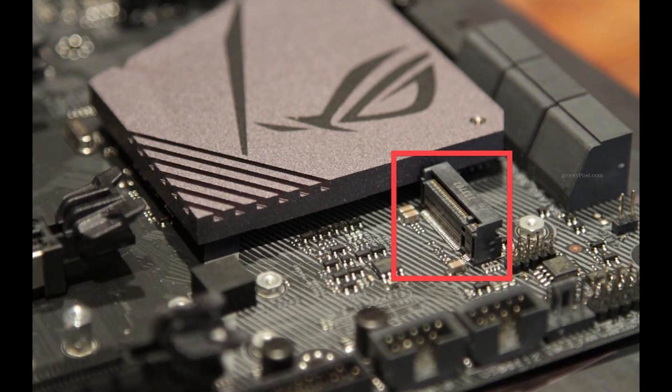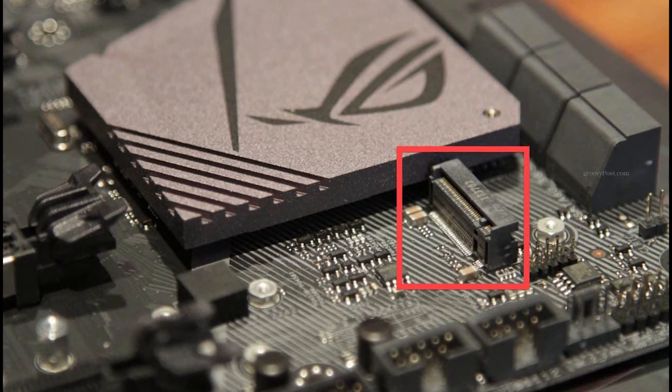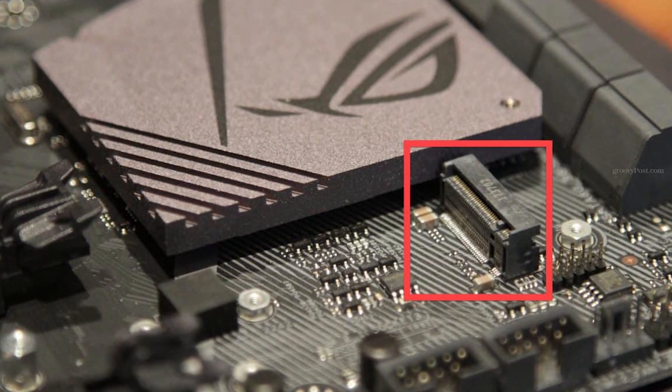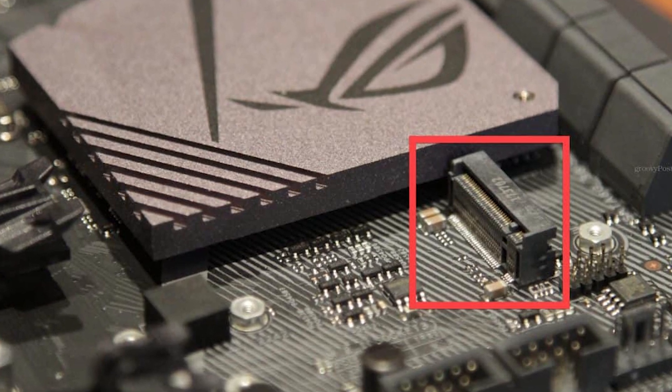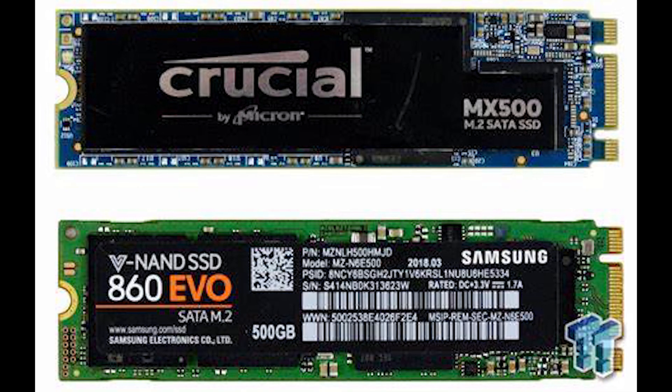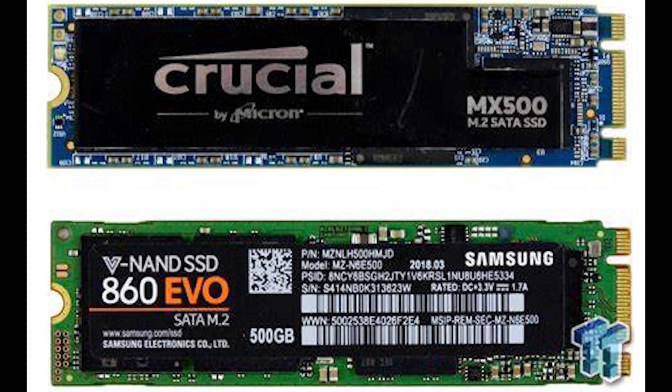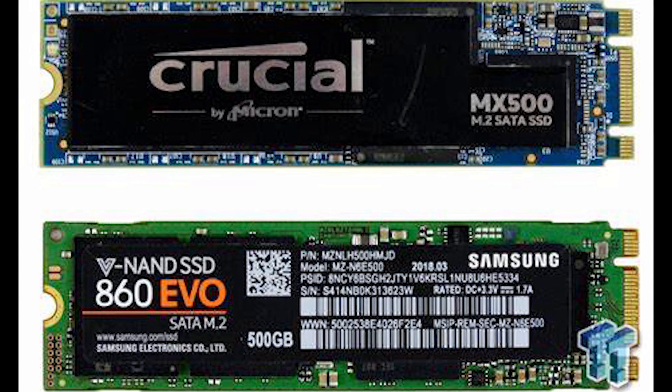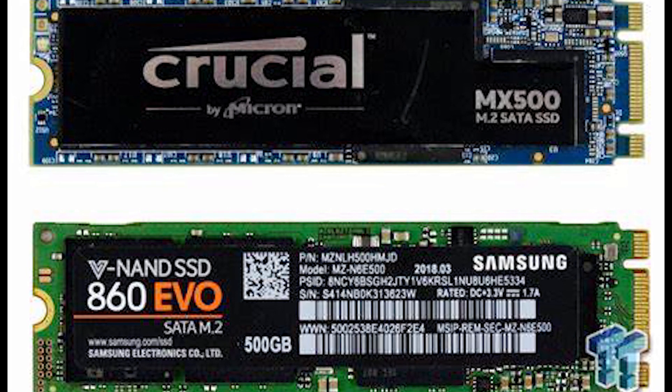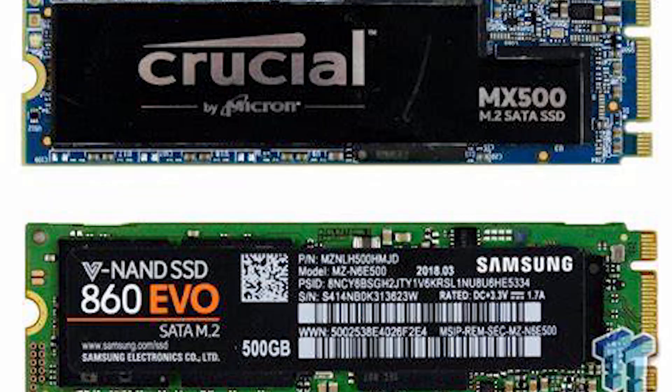The next one is NGFF M.2 SSD, which is the refined version of mSATA SSD. M.2 is an expansion slot that can connect with SATA 3.0, PCIe 3.0, and USB 3.0. NGFF M.2 SSD is also called SATA M.2 SSD. Its speed is the same as SATA 3 SSD and mSATA SSD. If the motherboard of your desktop PC or laptop has an M.2 slot, you can improve your computer's performance with SATA M.2 SSD. Most motherboard M.2 slots support SATA M.2 SSD, but some do not.